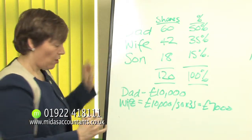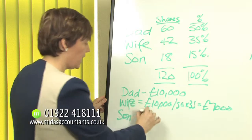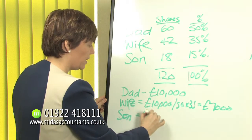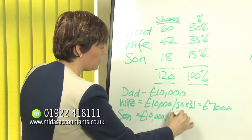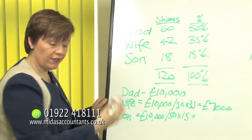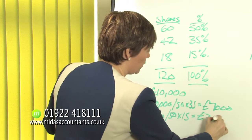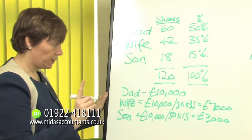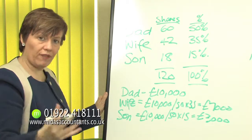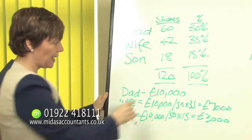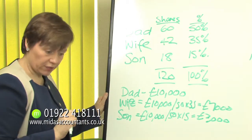And son must have his in the same ratio. So he will have £10,000 divided by dad's £50,000 times his own £15,000 — so he will actually have £3,000. The company has to make sure it has enough profits after tax to pay out £10,000, £7,000, and £3,000 — £20,000 worth in dividends.